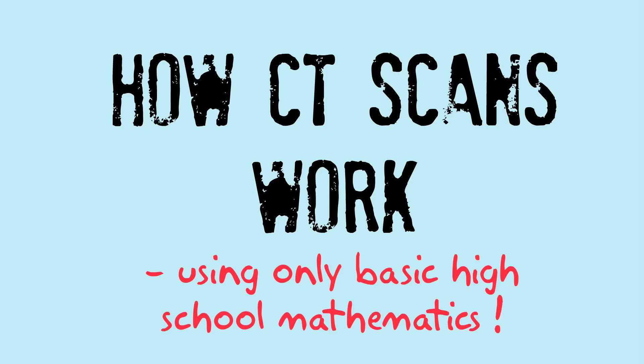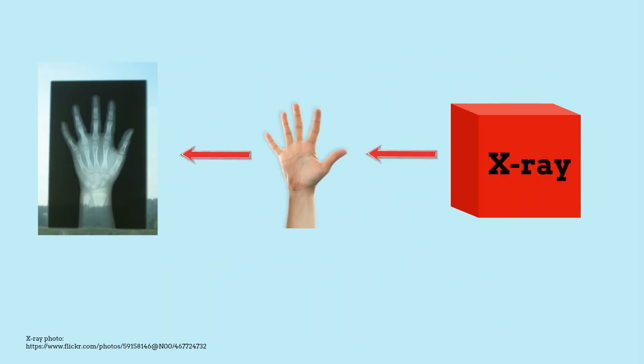In order to understand how a CT scan works, it's first useful to understand one of the limitations of the x-ray. So here's my hand being x-rayed, and different parts of my hand, be they blood, muscle, bone, stop varying amounts of the x-ray getting onto the photographic plate. And so we can get an idea of what's going on inside my hand.